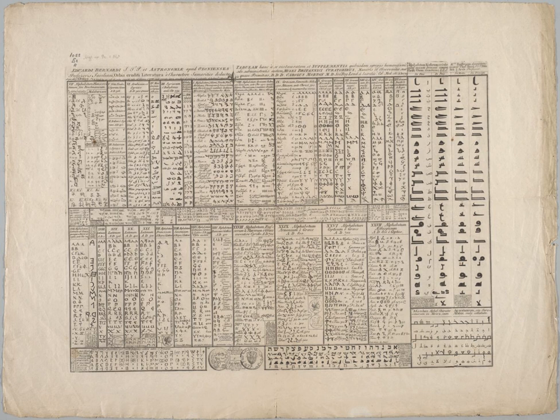Zhuyin is a semi-syllabary used to phonetically transcribe Mandarin Chinese in the Republic of China. After the later establishment of the People's Republic of China and its adoption of Hanyu Pinyin, the use of Zhuyin today is limited, but it is still widely used in Taiwan where the Republic of China still governs. Zhuyin developed out of a form of Chinese shorthand based on Chinese characters in the early 1900s and has elements of both an alphabet and a syllabary. Like an alphabet, the phonemes of syllable initials are represented by individual symbols, but like a syllabary the phonemes of the syllable finals are not — each possible final excluding the medial glide is represented by its own symbol.